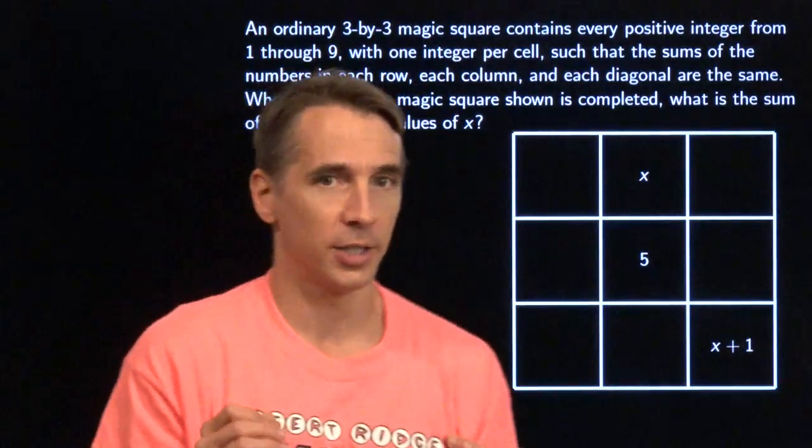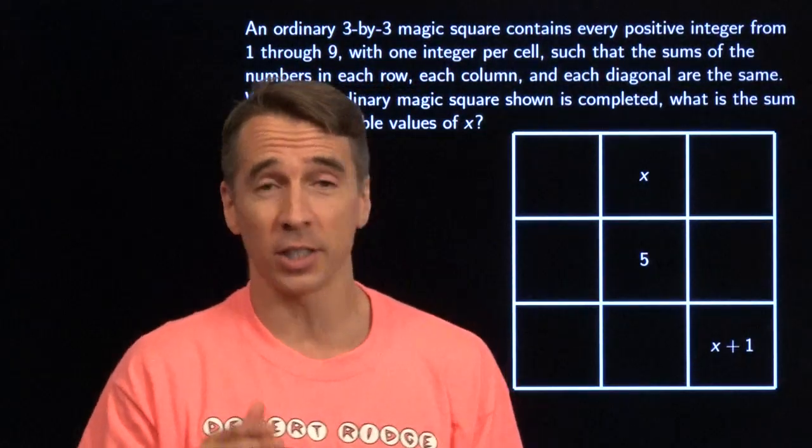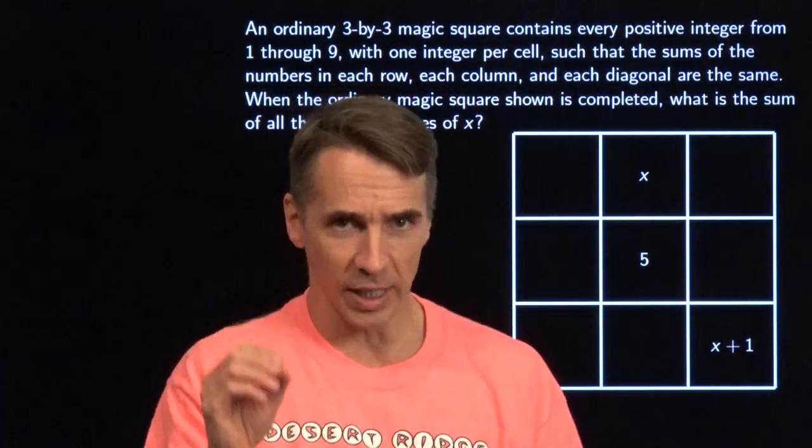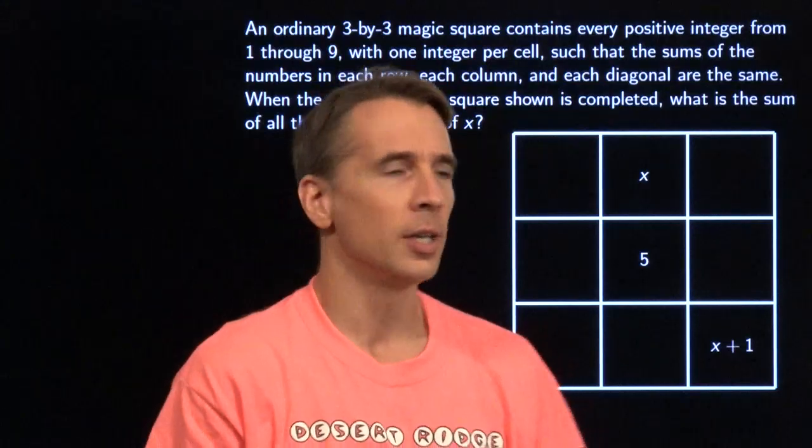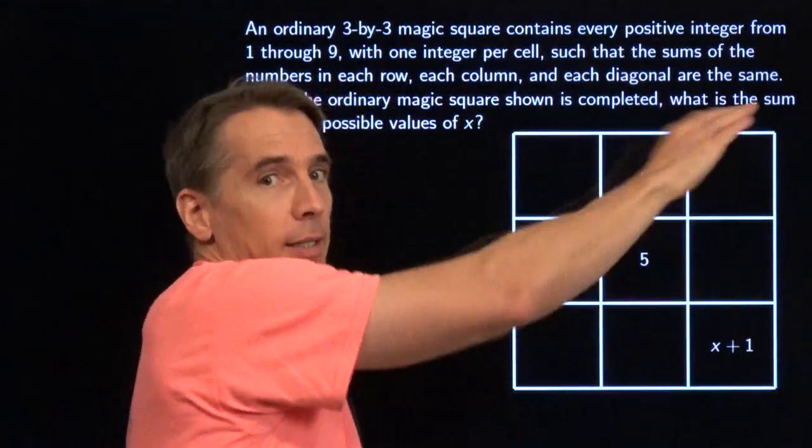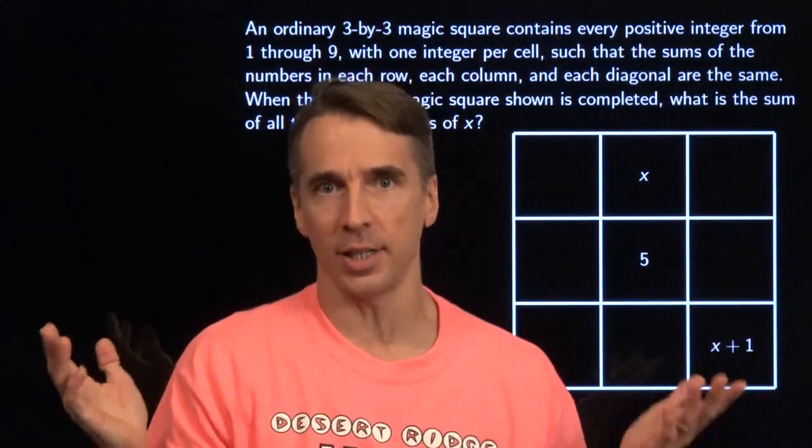We're working with an ordinary magic square. In an ordinary magic square, we fill each of the cells with the numbers 1 through 9, using each number exactly once, such that each row, each column, and each diagonal adds up to the same number.